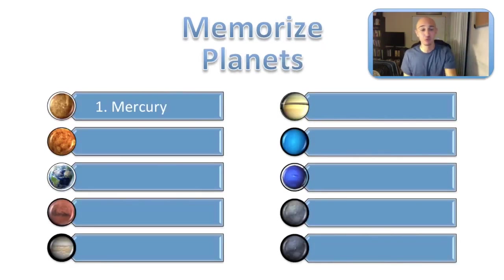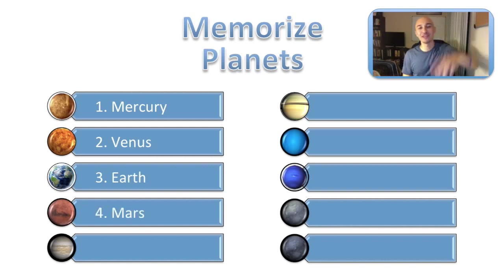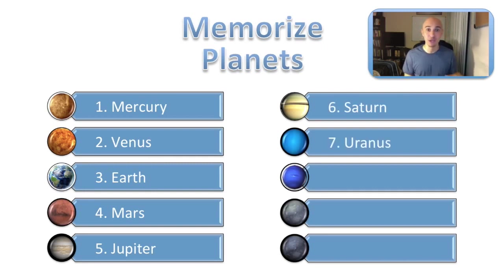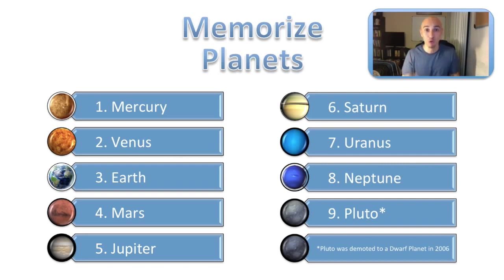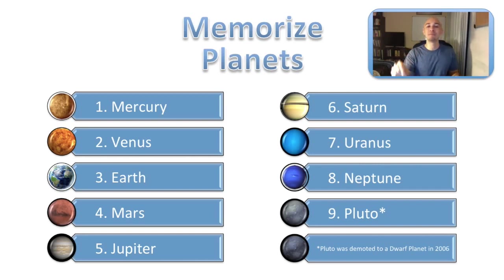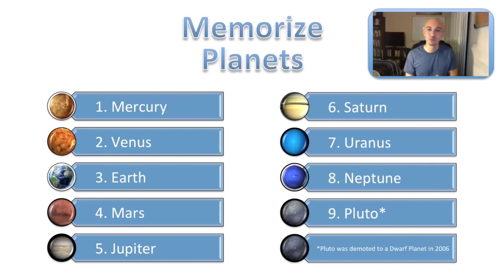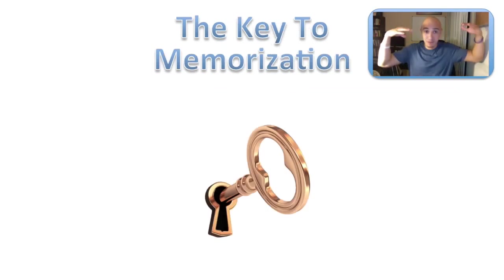Let's browse through the planets real quick. First is Mercury, second Venus, third Earth, fourth Mars, fifth Jupiter, sixth Saturn, seventh Uranus, eighth Neptune, and ninth — yes, there was at one point a ninth planet, but Pluto got demoted to a dwarf planet back in 2006 by Neil deGrasse Tyson and other astrophysicists. I'm still going to give you a trigger image to remember that there's another rock out there in space.